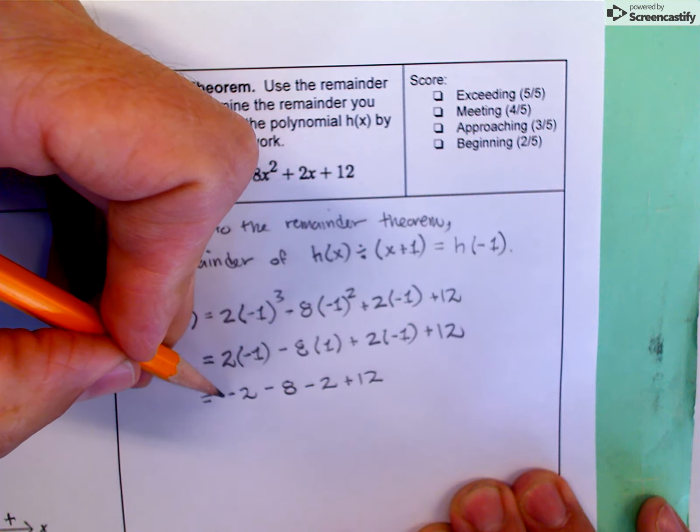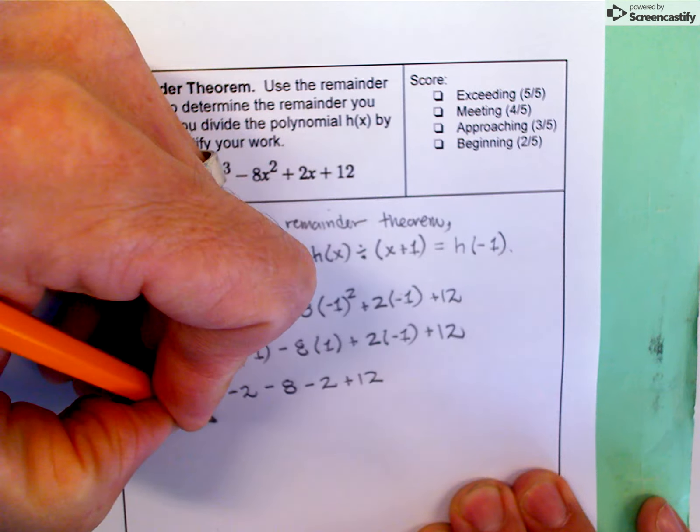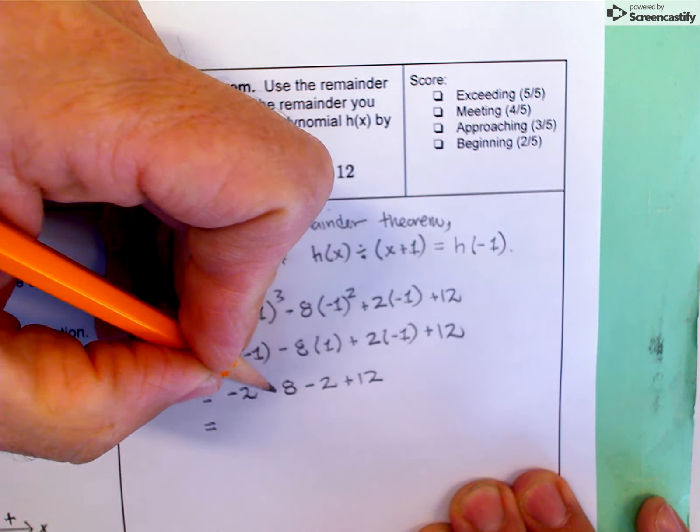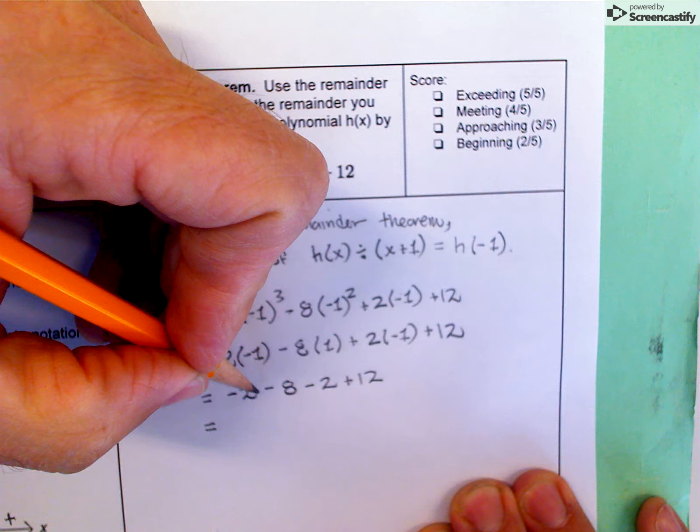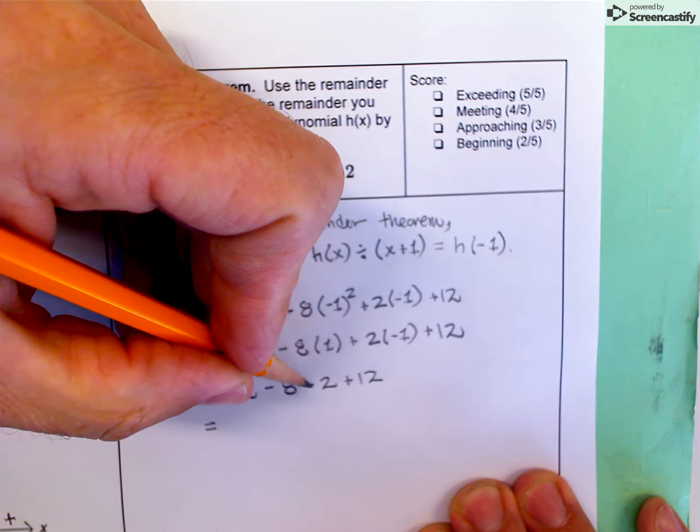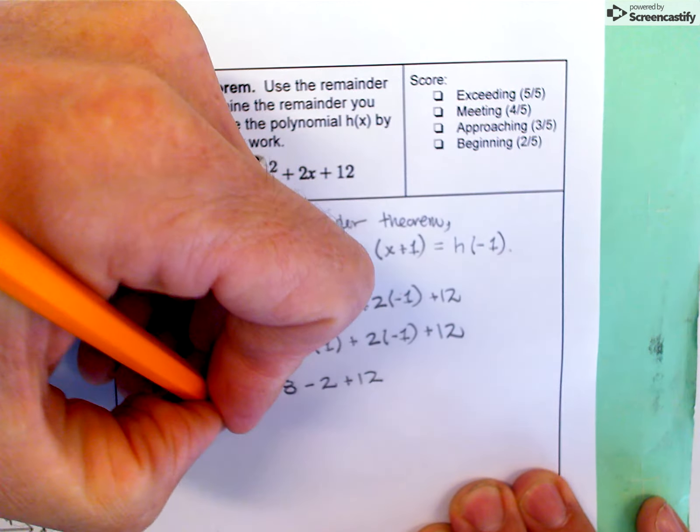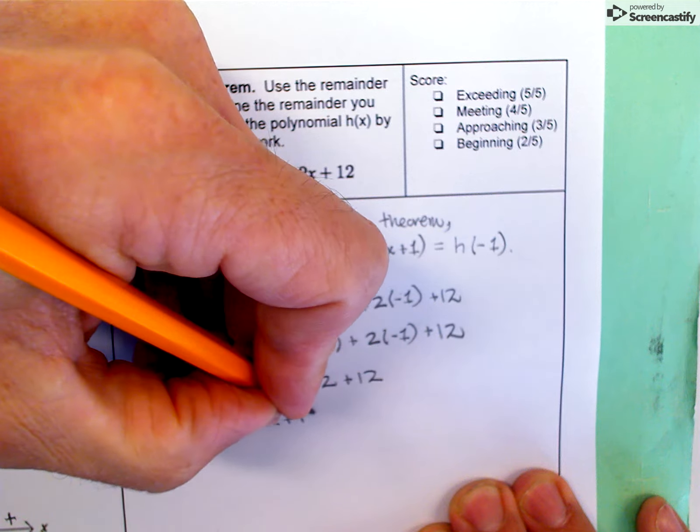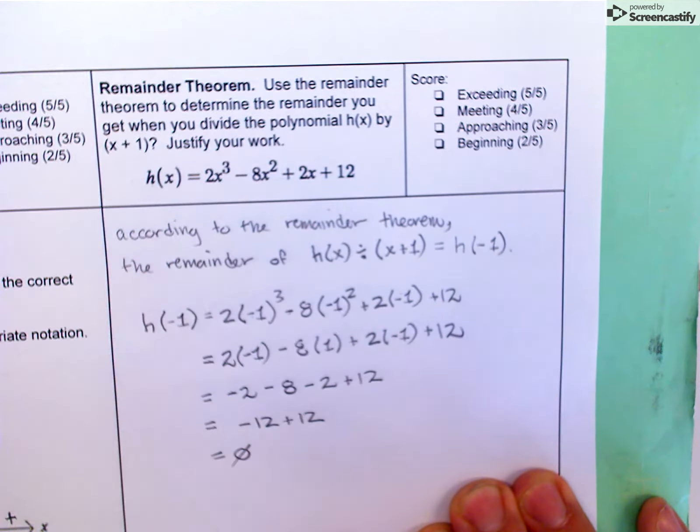Now all I've got to do is addition and subtraction from left to right. -2 minus 8, that's -10. -10 minus 2, -12. So I get -12 plus 12 here, which equals 0.